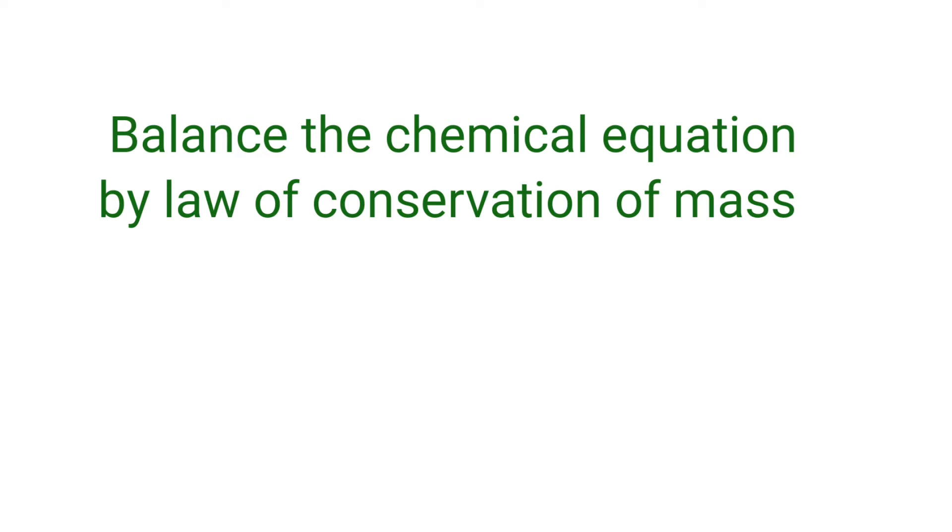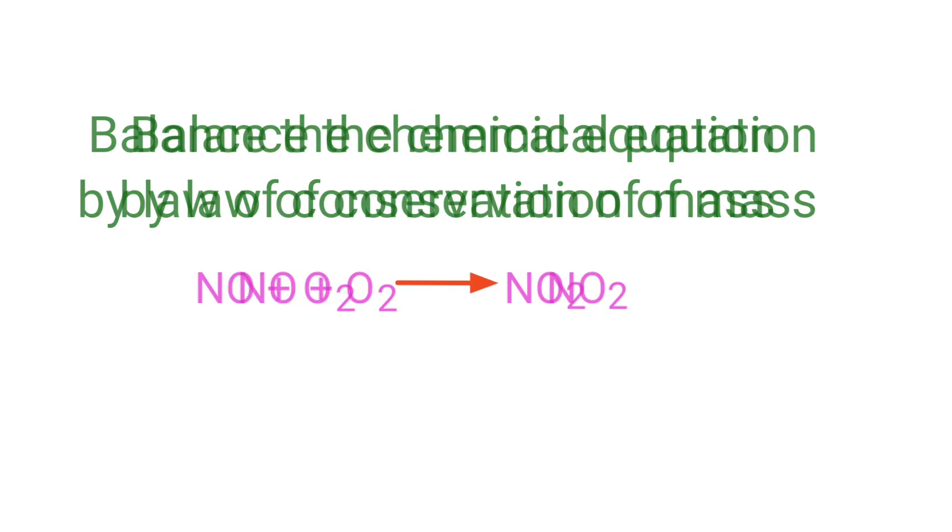Balance the chemical equation by law of conservation of mass. Nitric oxide plus oxygen gives us nitrogen dioxide. In this equation, the reactants are nitric oxide and oxygen, and the product is nitrogen dioxide.